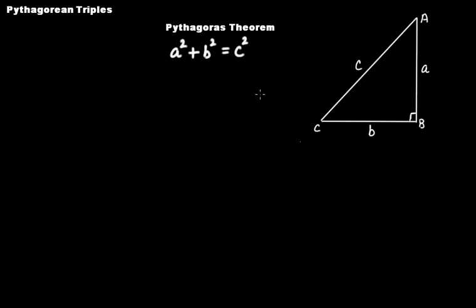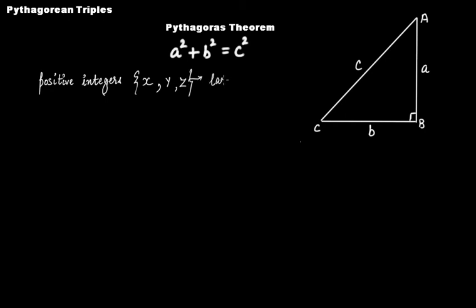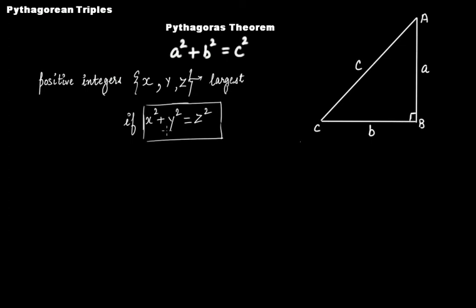Now you'll ask how is it related to Pythagorean triples? If we have a set of three positive integers x, y, z — where z is the largest of these three numbers — and if x squared plus y squared is equal to z squared, if this condition gets satisfied, then this is actually pointing towards the Pythagoras theorem. It means that using x, y, and z as the lengths of the three sides, you can form a right-angled triangle something like this.